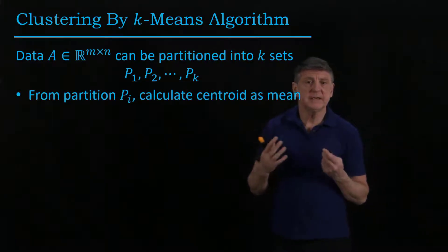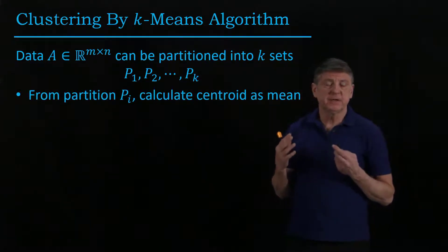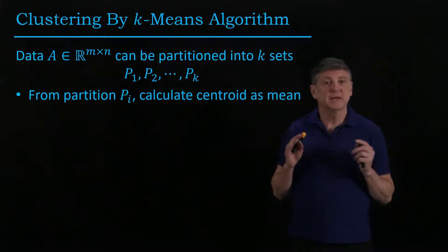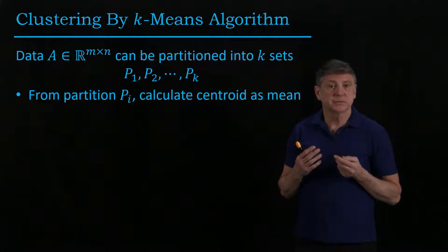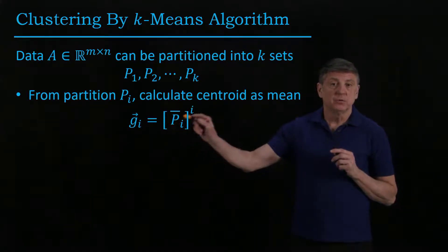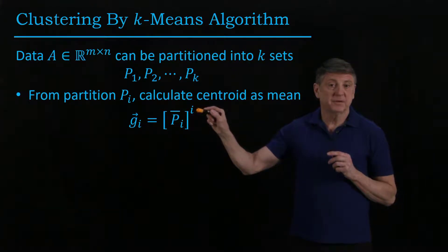So the idea behind this is, if you're given a partition, what you can do is you can calculate what's called the centroid, or center of mass. In our terms, that's simply a mean. And this mean is, you find the mean of the observations, and then what you have to do is transpose it, and that's not happening here.